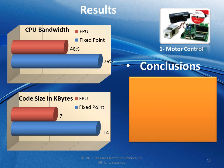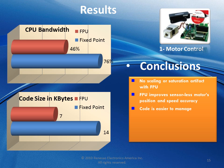We do not have any scaling or artifact effects usually present with the fixed point implementation. We also have improved accuracy of the model positioning and speed. Code is easier to maintain since formulas are directly translated into C language. We also have, as shown in the diagrams, reduced CPU bandwidth usage and reduced code size.